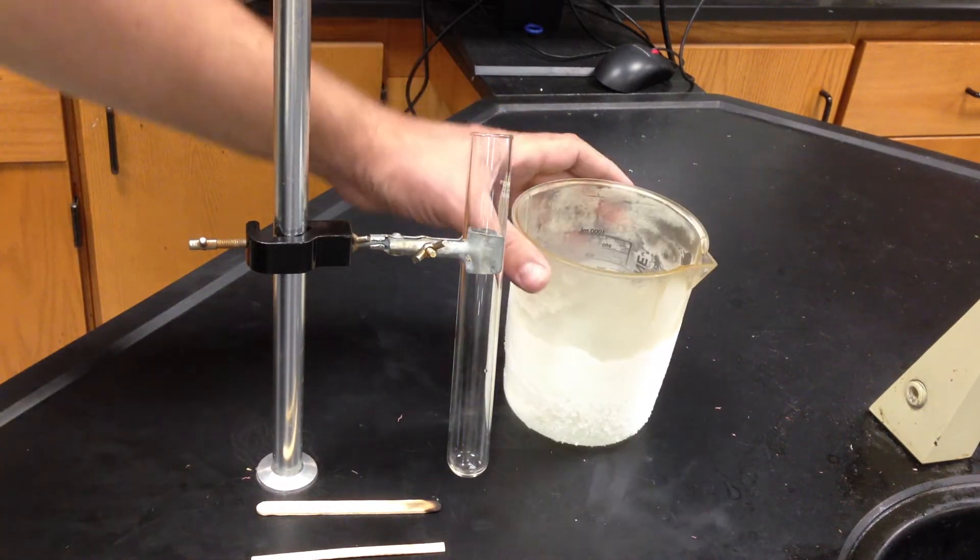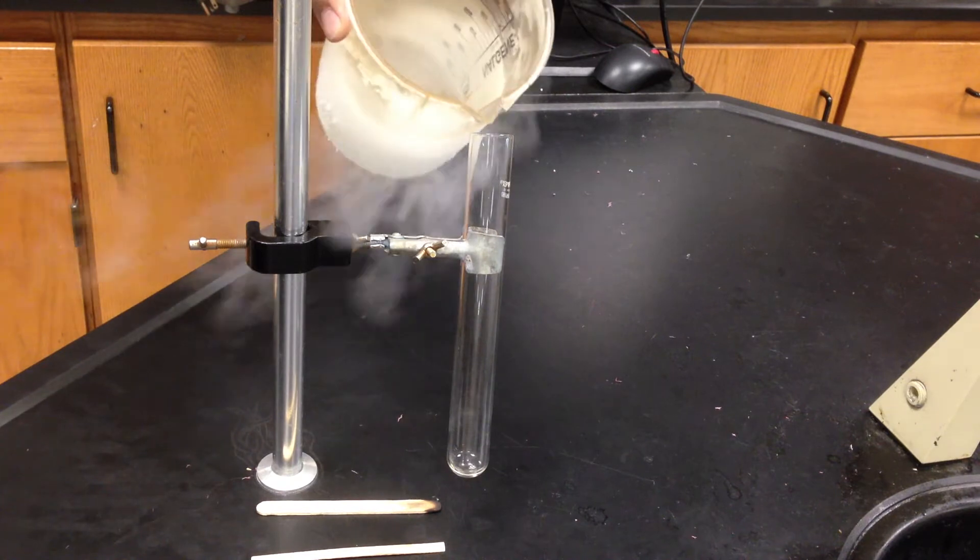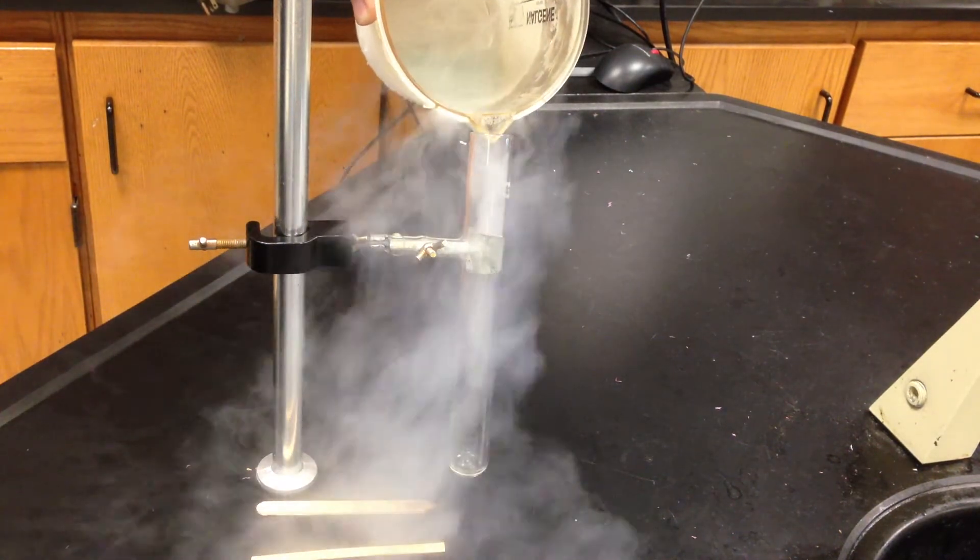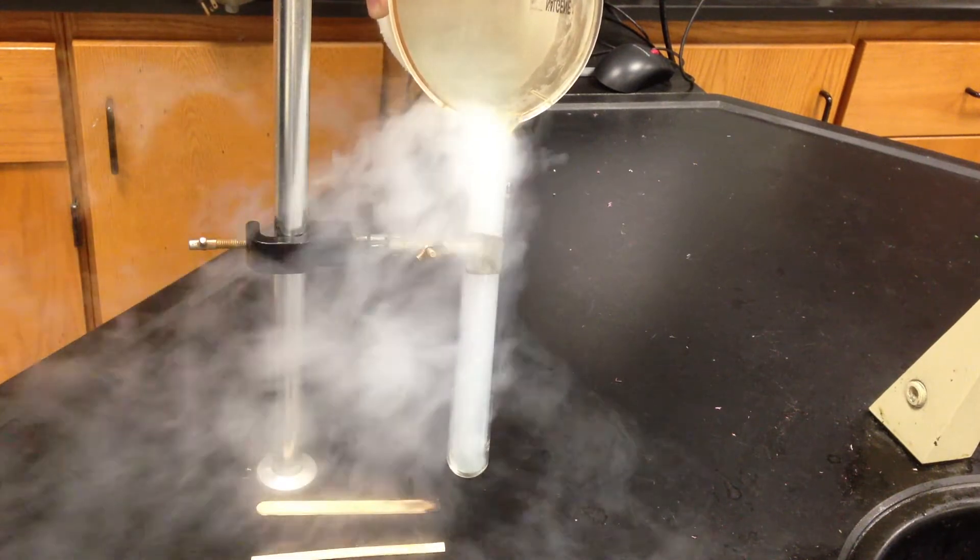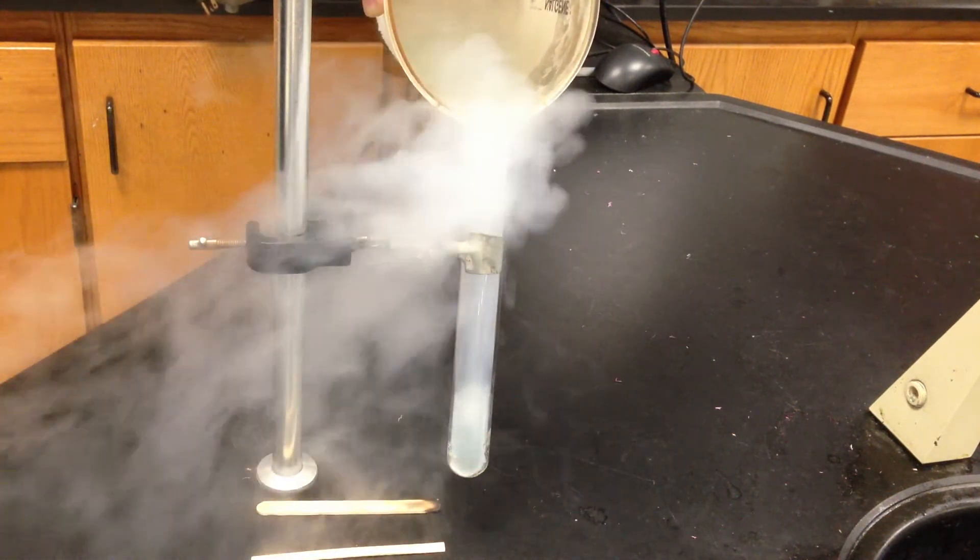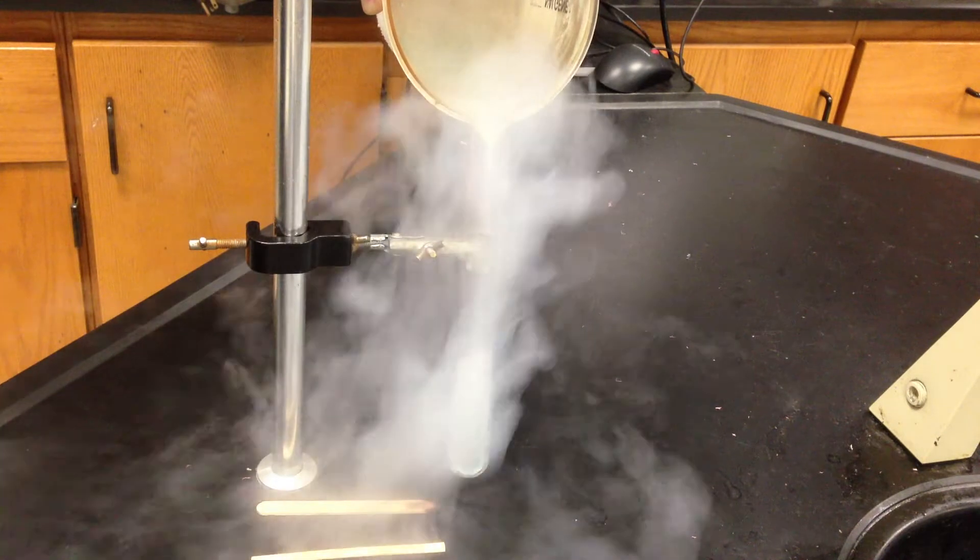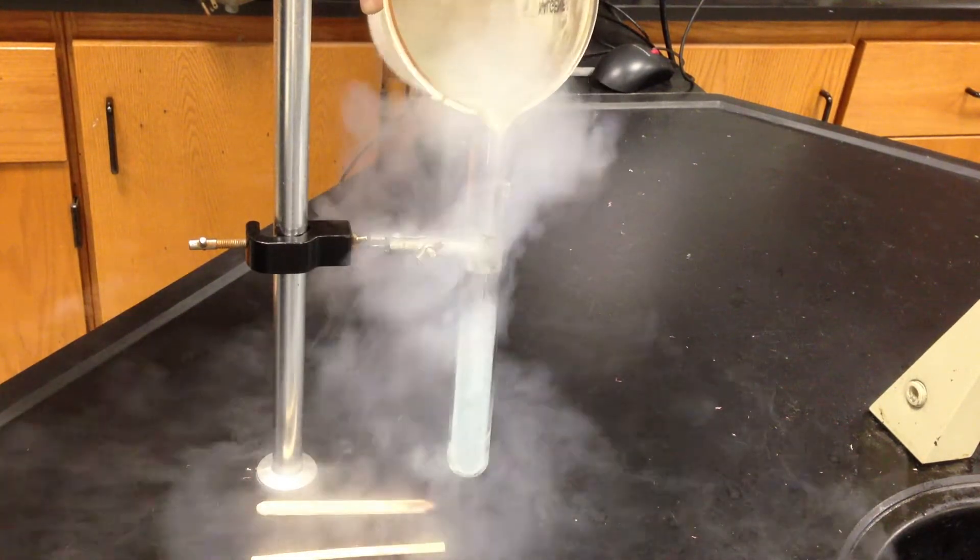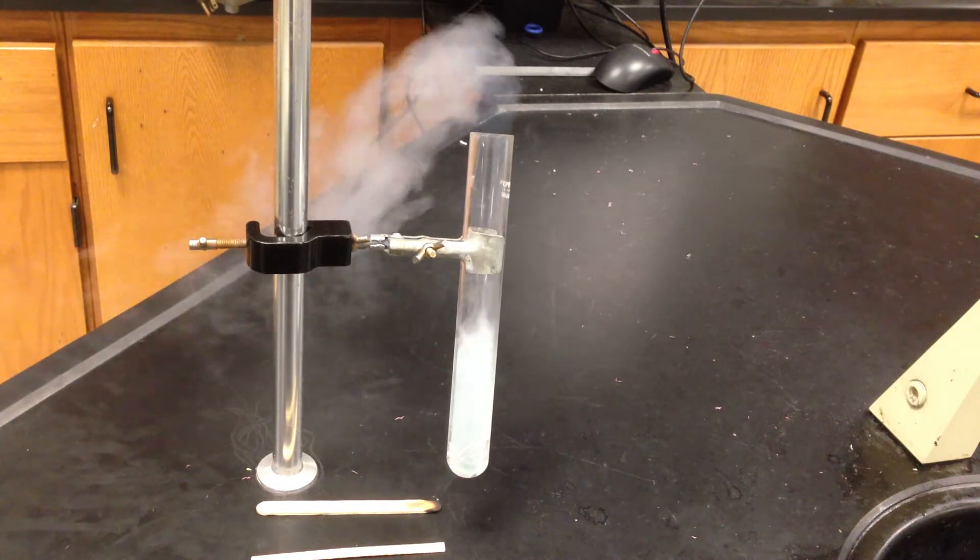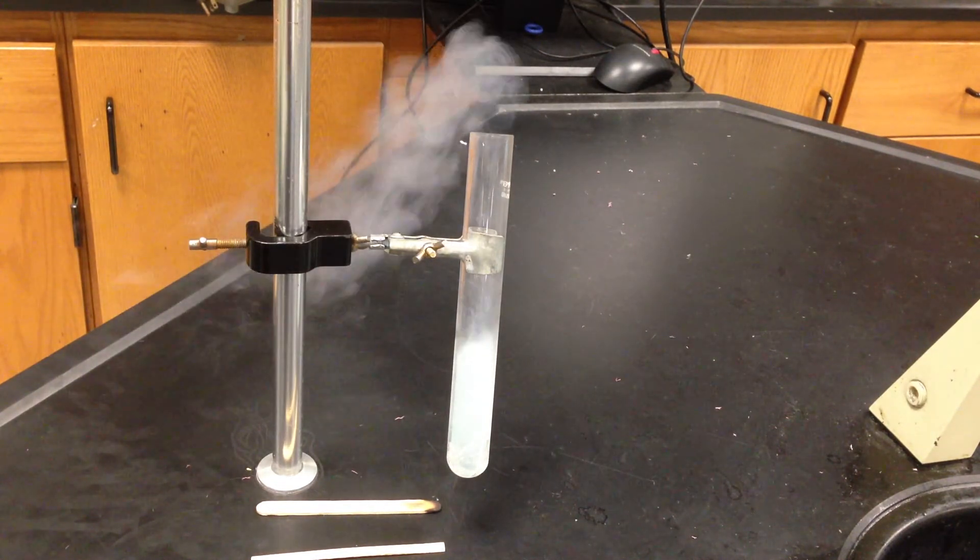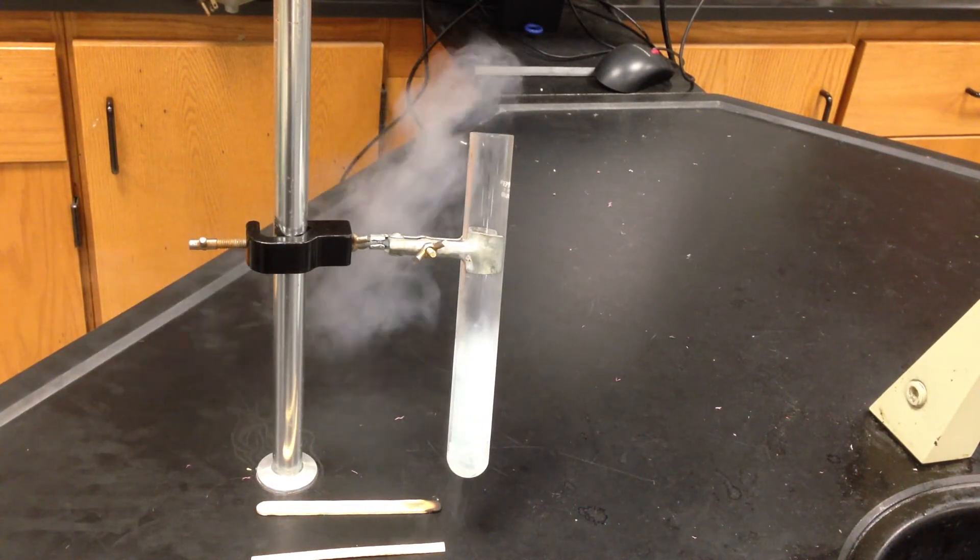So let's pour some of this beautiful blue liquid oxygen into this fire tube. Very beautiful blue liquid, blue because of something called an antibonding orbital, an antibonding orbital that the lone pair of electrons like to exist in.